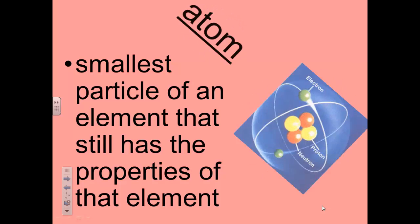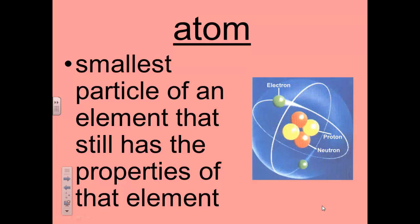An atom is the smallest particle of an element that still has the properties of that element. Atoms of one element are different from atoms of other elements. Atoms are too small to be seen even with a microscope. The properties of atoms determine the properties of an element and how the element can combine with other elements.